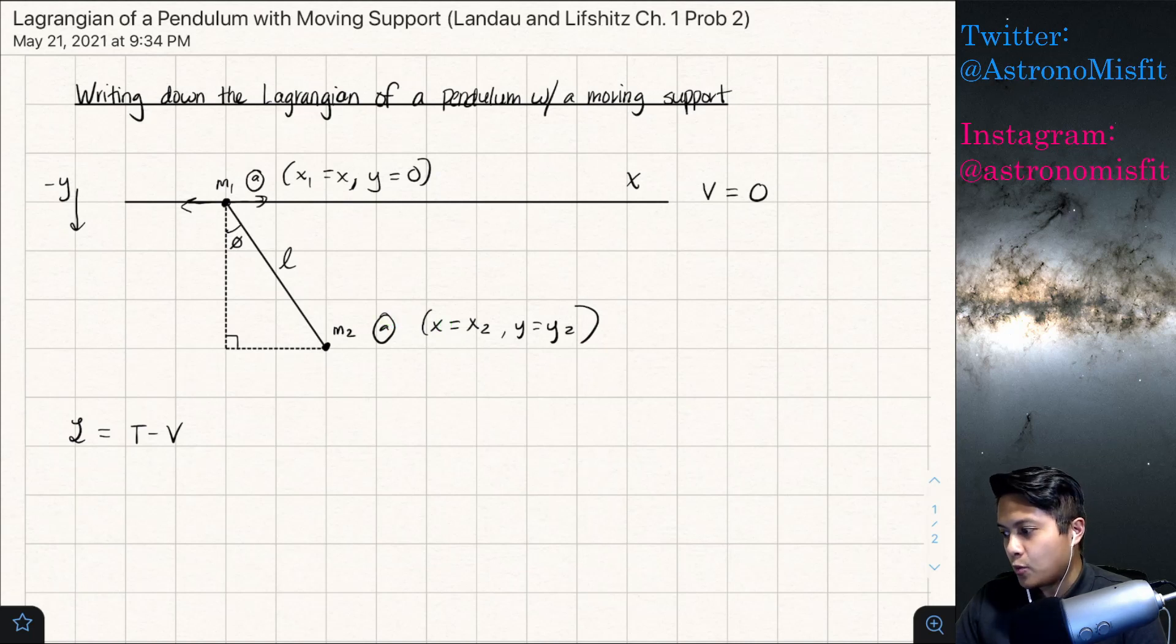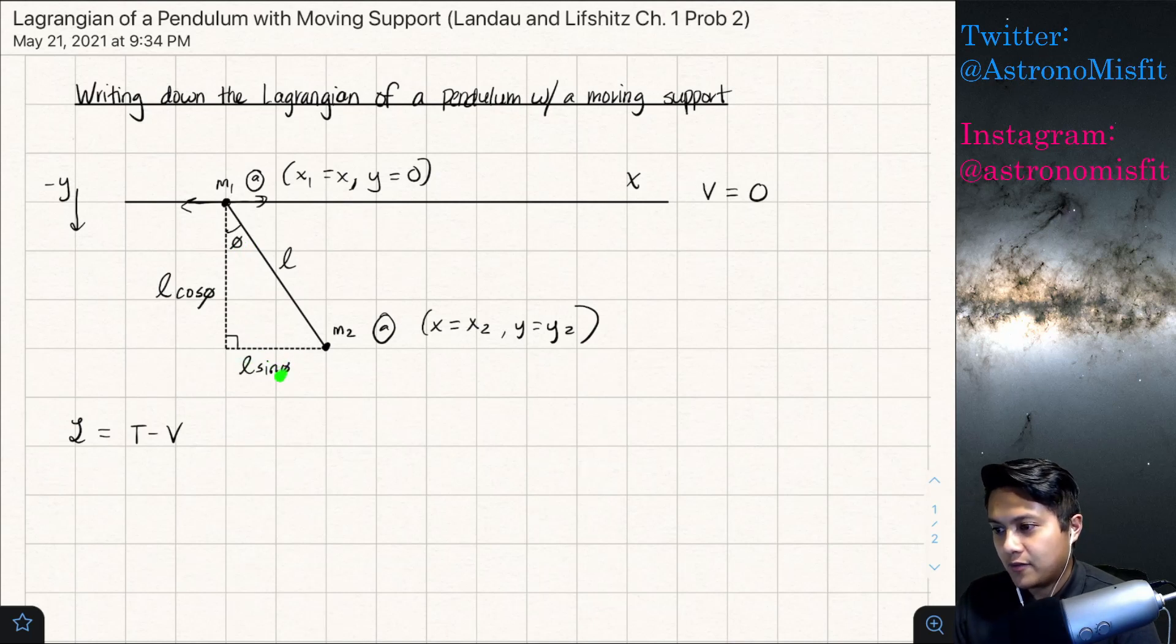Now one of the first things that we can do in this problem is actually do some trig and work out the sides of this triangle. So this side is going to be l cosine of phi and then the bottom leg is going to be l sine of phi just based on trigonometry here because this is the adjacent side to the angle phi and this is the opposite side to the angle phi so we'll have l cosine phi, l sine phi.